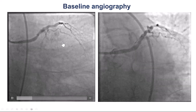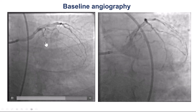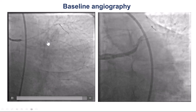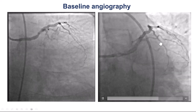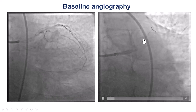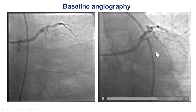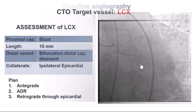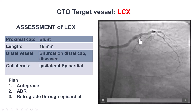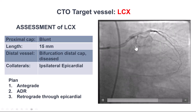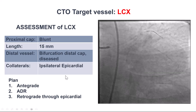This is the coronary angiogram. We do have the CTO of the proximal circumflex. There's a bifurcation on the distal cap. There is this first obtuse marginal branch, and then the CTO, and then the distal vessel with OM2 and distal circumflex. To summarize, what we have is a blunt proximal cap, short length, bifurcation on distal cap, and this is filling mainly via ipsilateral bridging collaterals.